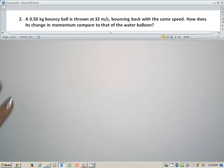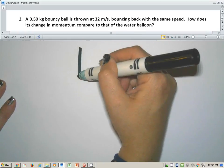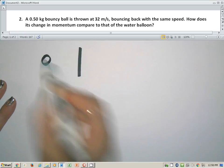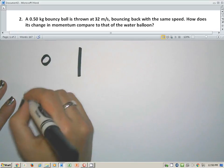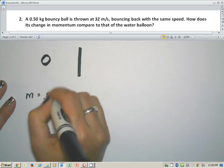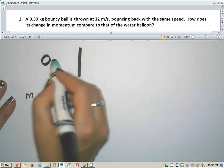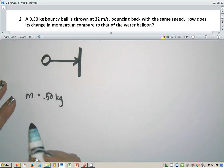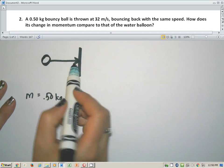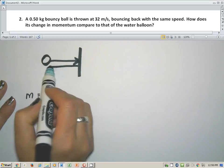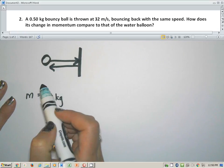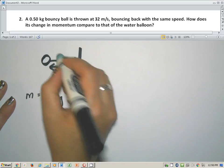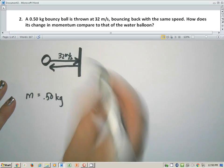Instead of a balloon, we take our same wall and we take a ball of the same mass. This ball has a mass of 0.50 kilograms. And we throw it at the wall. And we know that if you hit a wall with the bouncy ball, it's going to rebound and it's going to come back off the wall. Well, when you throw it at the wall, it hits at 32 meters per second.